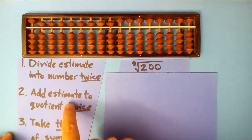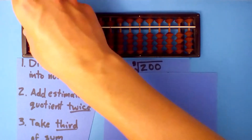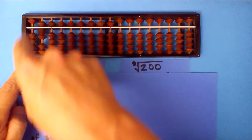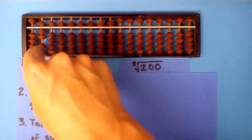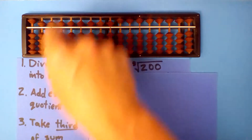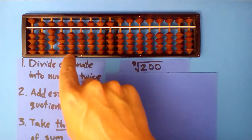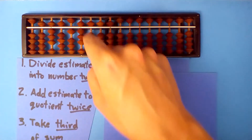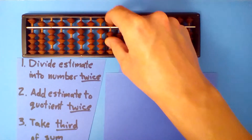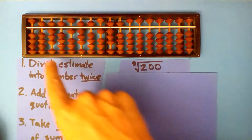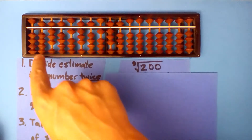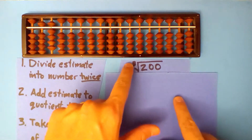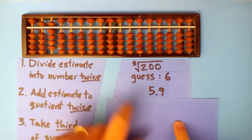Now we add our estimate to the quotient twice — so let's add 6, and then add 6 again. Finally, take a third of the result. A third of 1 is 0, but we carry that 1 over. A third of 17 is 5. Carry the 2 over — a third of 25 is 8. A third of 15 is 5. A third of 5 is 1. A third of 25 is 8, a third of 15 is 5, and this repeats: 2, 1, 8, 5. This is only our first time through, so we don't need all these digits — we'll just keep the first two. I'll round this 5 up and get rid of all these. So our better estimate is 5.9. Our guess was 6, and our first improvement is 5.9, but we can improve this again.